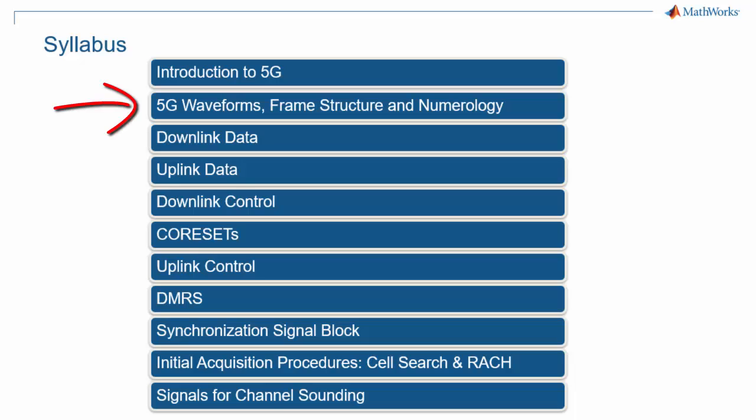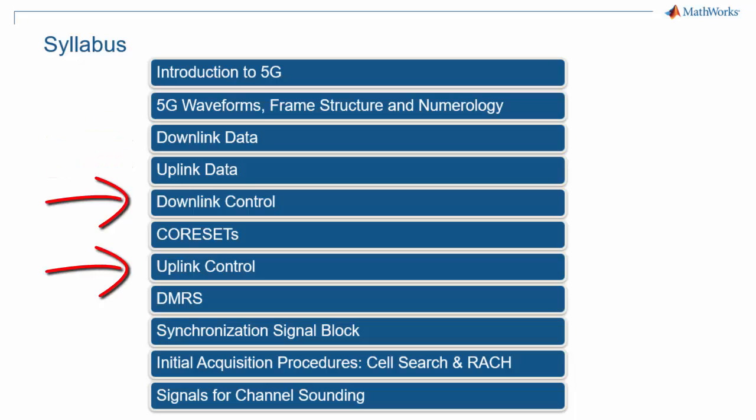5G NR introduces a new numerology for the OFDM resource grid and a new frame and slot structure, as well as new processing for downlink and uplink data, downlink and uplink control.